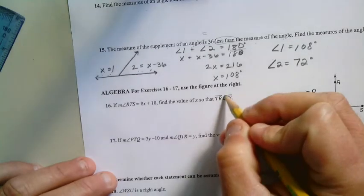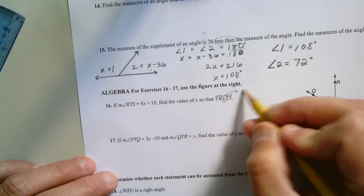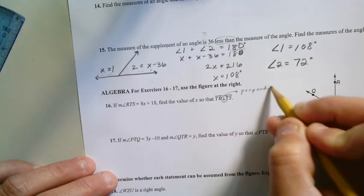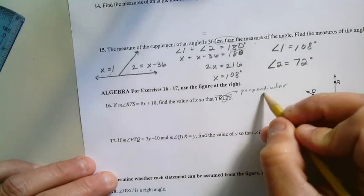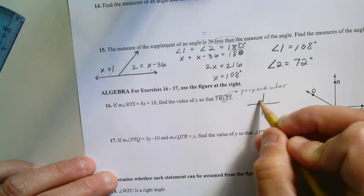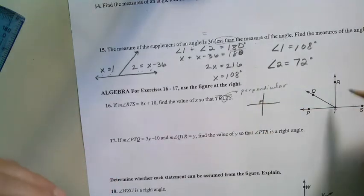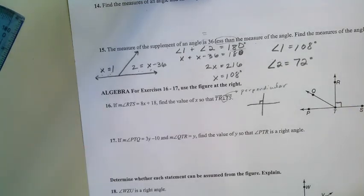The only other thing that I think I should go over with you to make sure that we're okay is going to be this upside down T. What did we say the other day that that meant? That meant perpendicular, right? And what does perpendicular mean? It means two lines that intersect to form right angles. And so what you want to do is you will want to put that TR and TS is a right angle, and then see if you can go ahead and solve numbers 16 and 17.